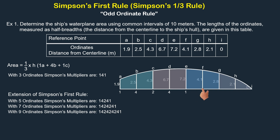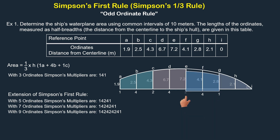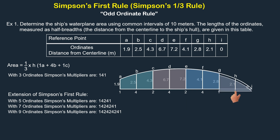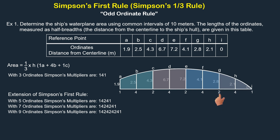For the fourth section, the multipliers at ordinate G will also be combined, making it 2 instead of 1. With 9 ordinates, the Simpson's multipliers are 1, 4, 2, 4, 2, 4, 2, 4, 1. You can apply this procedure as long as there are multiple ordinates. Remember, the more ordinates you use, the closer your calculated area will be to the actual area. Always ensure that the final multiplier is 1, as the last ordinate only belongs to a single segment.